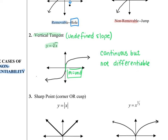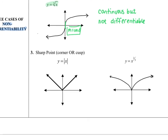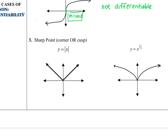Our third case is a sharp point, which could be either a corner — as with the absolute value function — or a cusp. Both result in a sharp point. Looking at the absolute value function, the slopes coming into that sharp point from the left are a constant negative 1, and at that moment they transition immediately to positive 1. There's no passage through the in-between values, just an abrupt change in slope, resulting in this corner point.